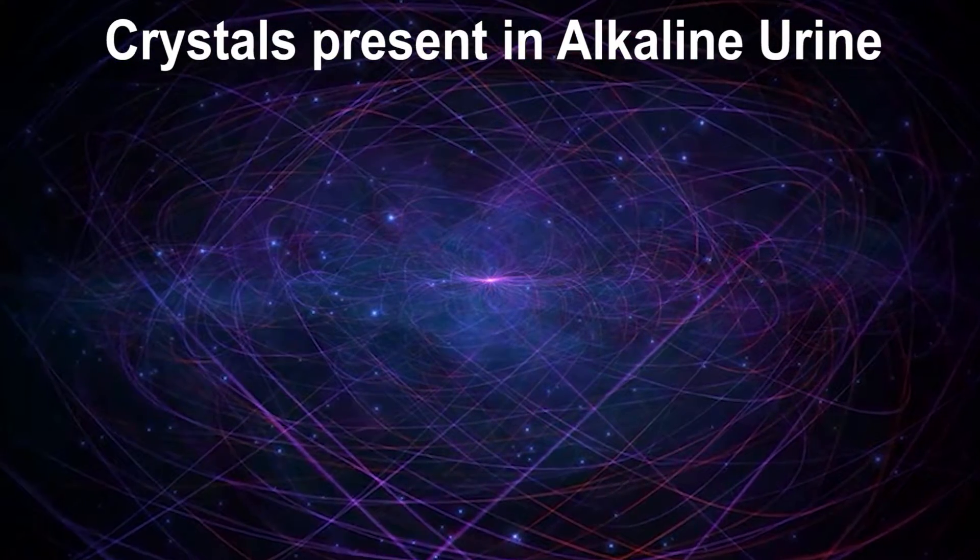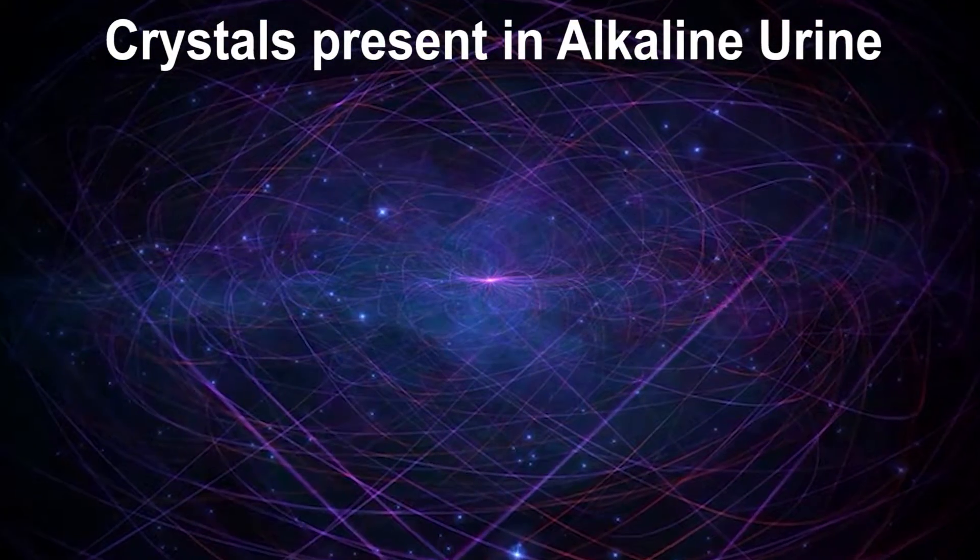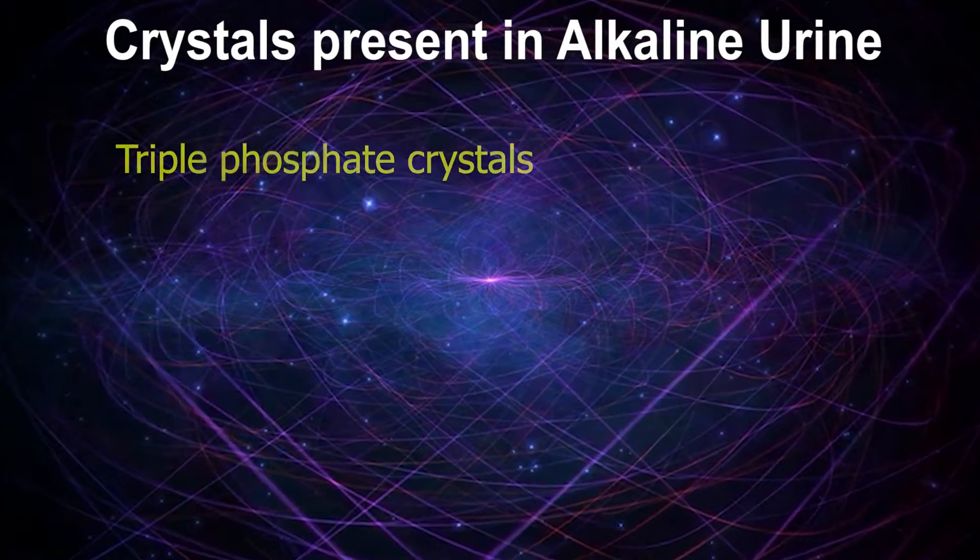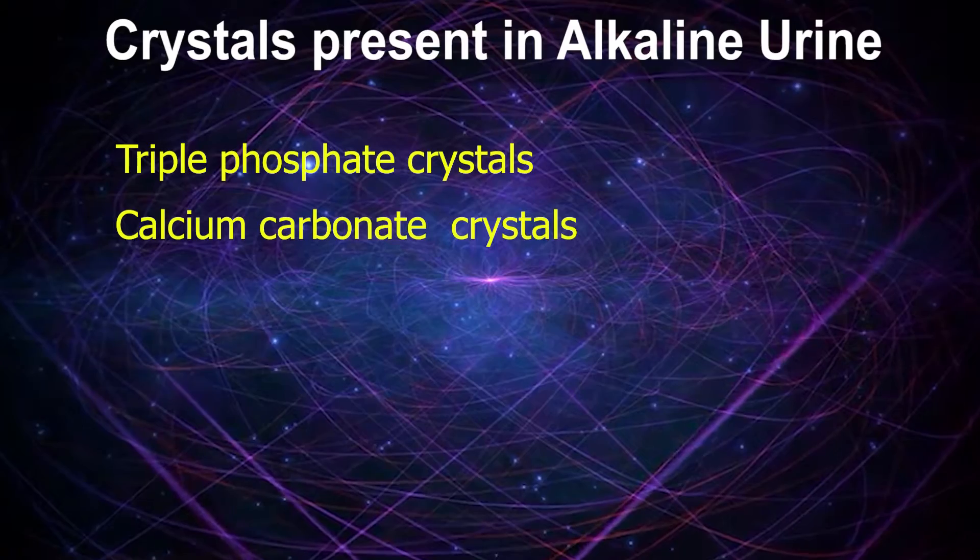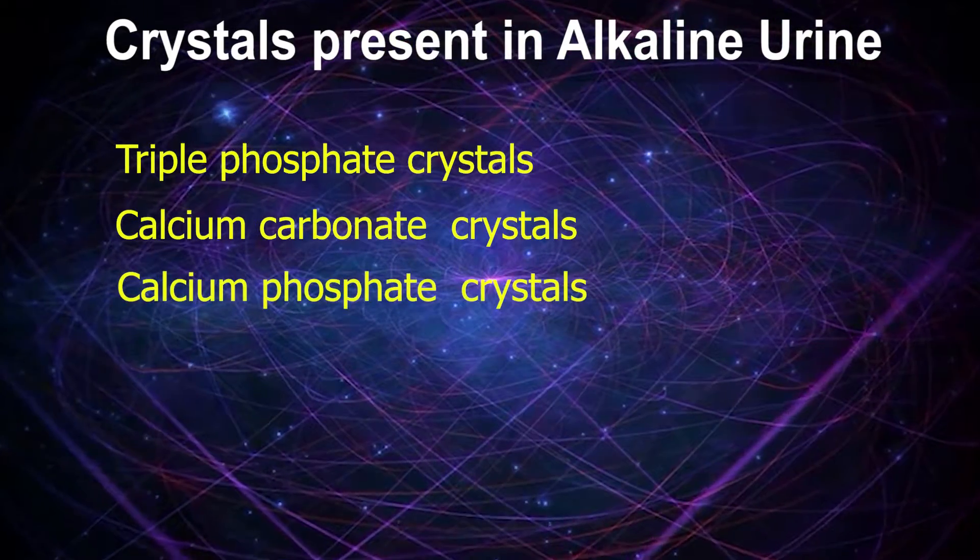Almost 5 types of crystals are present in alkaline urine. They are triple phosphate crystals, calcium carbonate crystals, calcium phosphate crystals, ammonium biurate crystals, and ammonium biurate phosphate crystals.